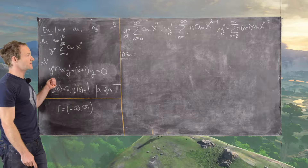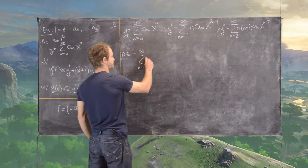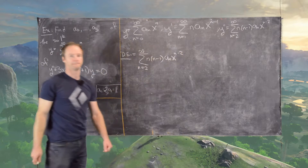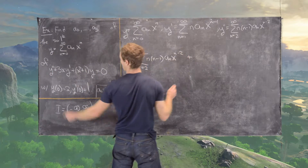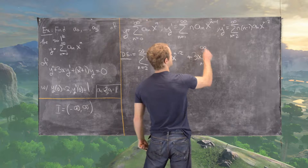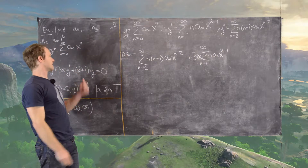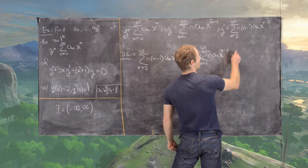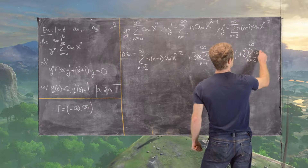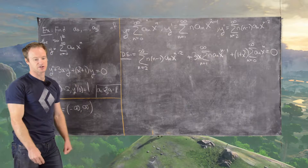The differential equation becomes the following. We have y double prime hanging by itself: the sum from n=2 to infinity of n(n−1)·a_n·x^(n−2). Plus 3x times the first derivative: the sum from n=1 to infinity of n·a_n·x^(n−1). And now we have (x squared plus 1), which I'll write as (1 + x²) times y, giving the sum from n=0 to infinity of a_n·x^n. We want that to equal 0.